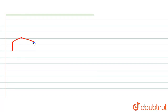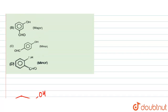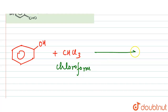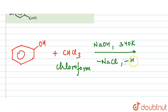First we have the phenol positioned as it appears in the products. Then we have its reaction with chloroform. When the reaction takes place, we use NaOH at 340 Kelvin.